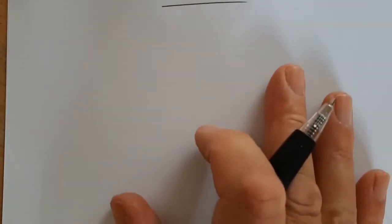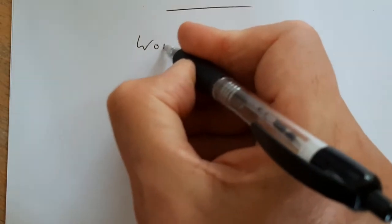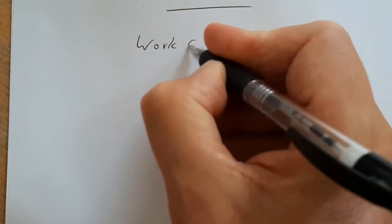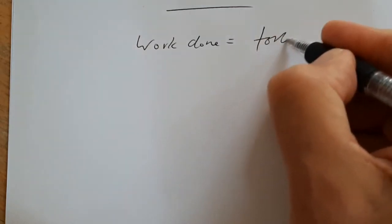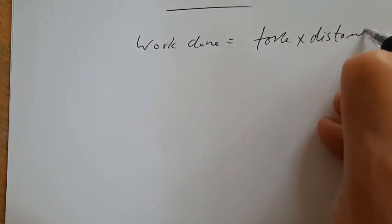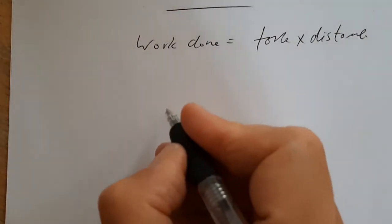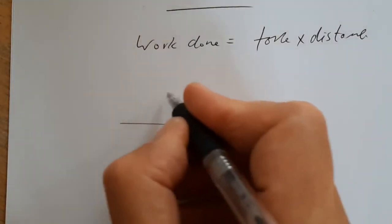And it turns out that this is all defined by something called work done, which you may have met in GCSE physics. And work done is equal to force times distance. So let's just work through a really straightforward example of that.